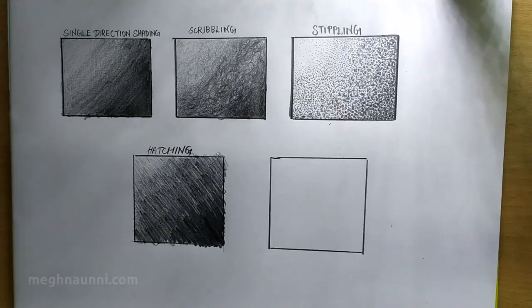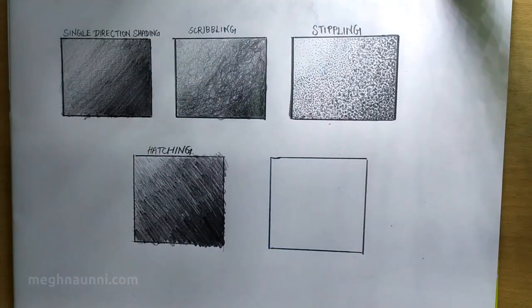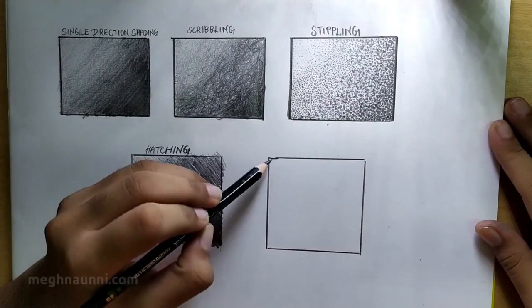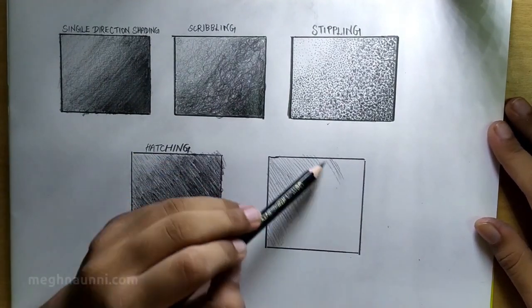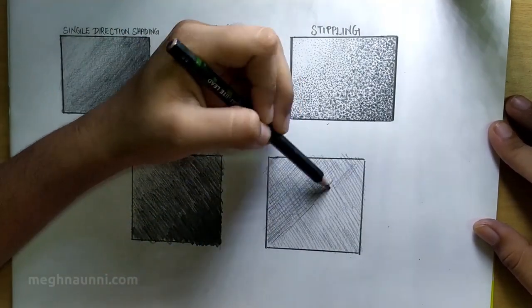The last method is cross hatching. This method is very similar to hatching. First, apply the strokes just like you did in hatching. Then do the same again but in the opposite direction, i.e. crossing the lines in the same method.